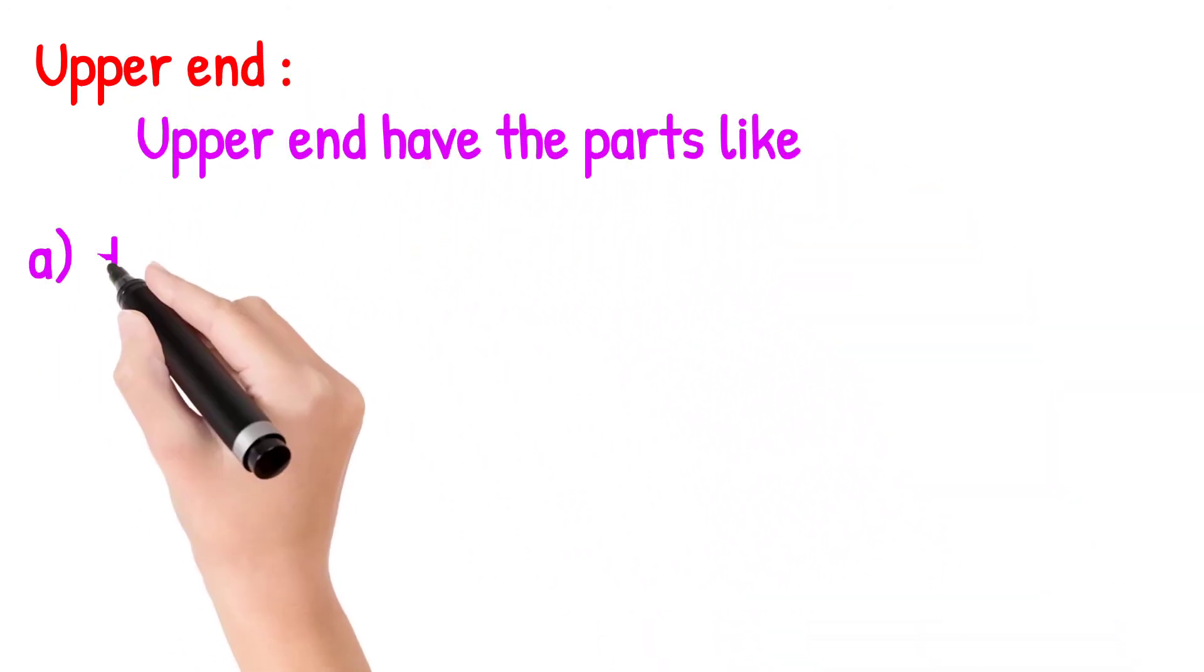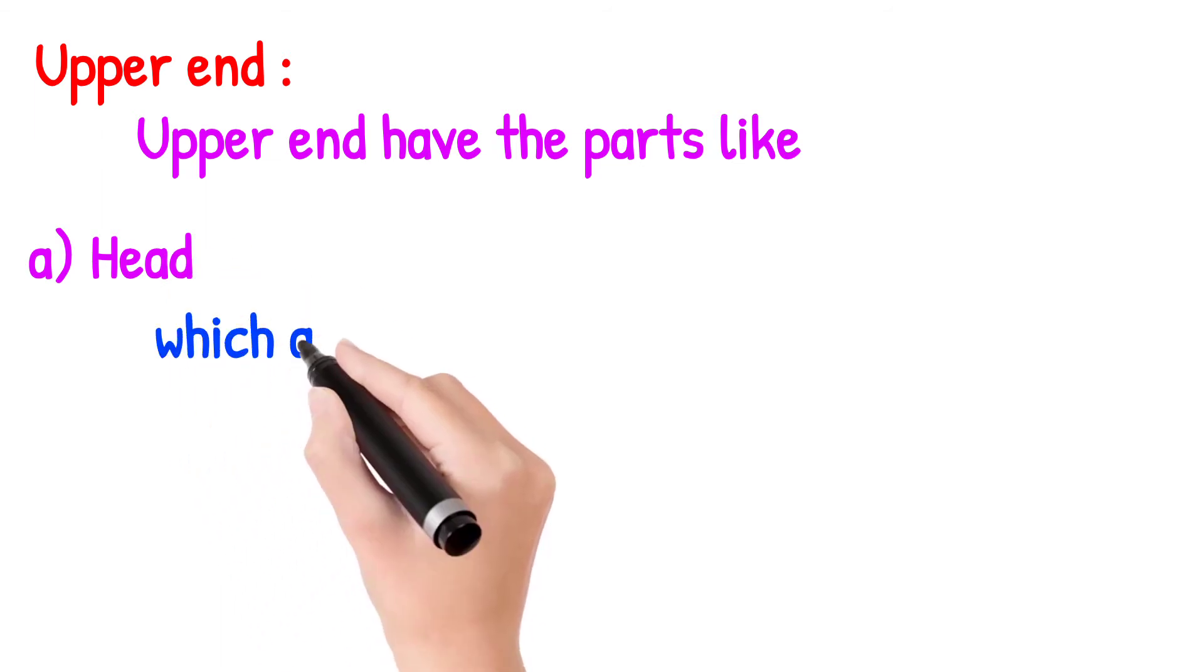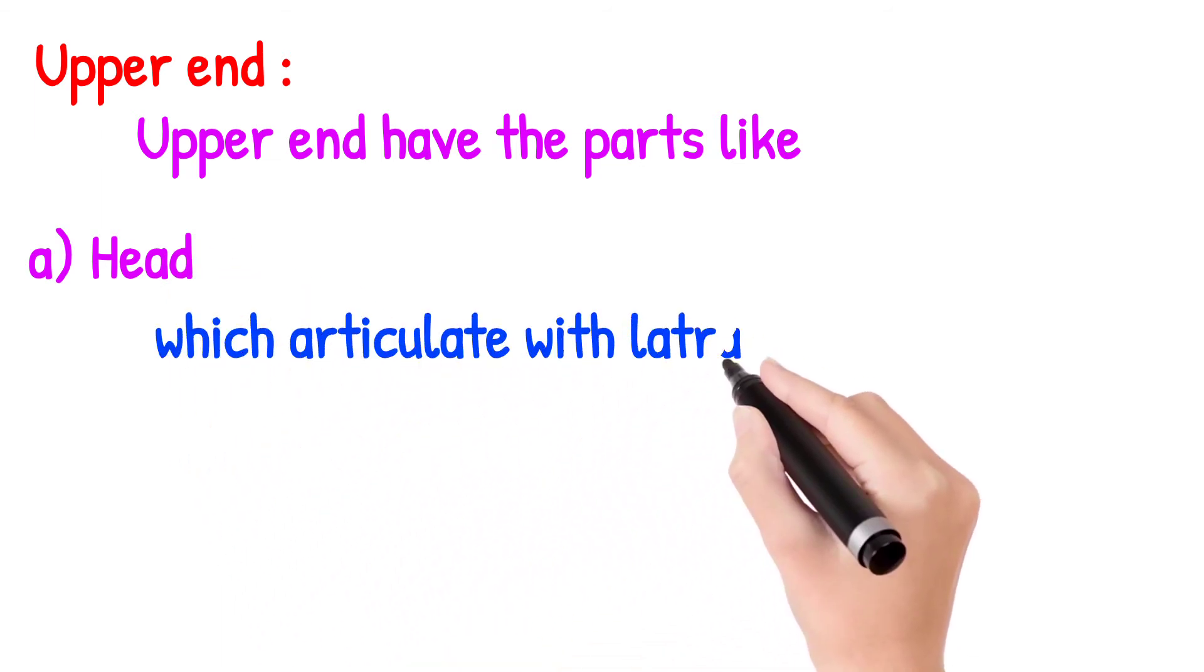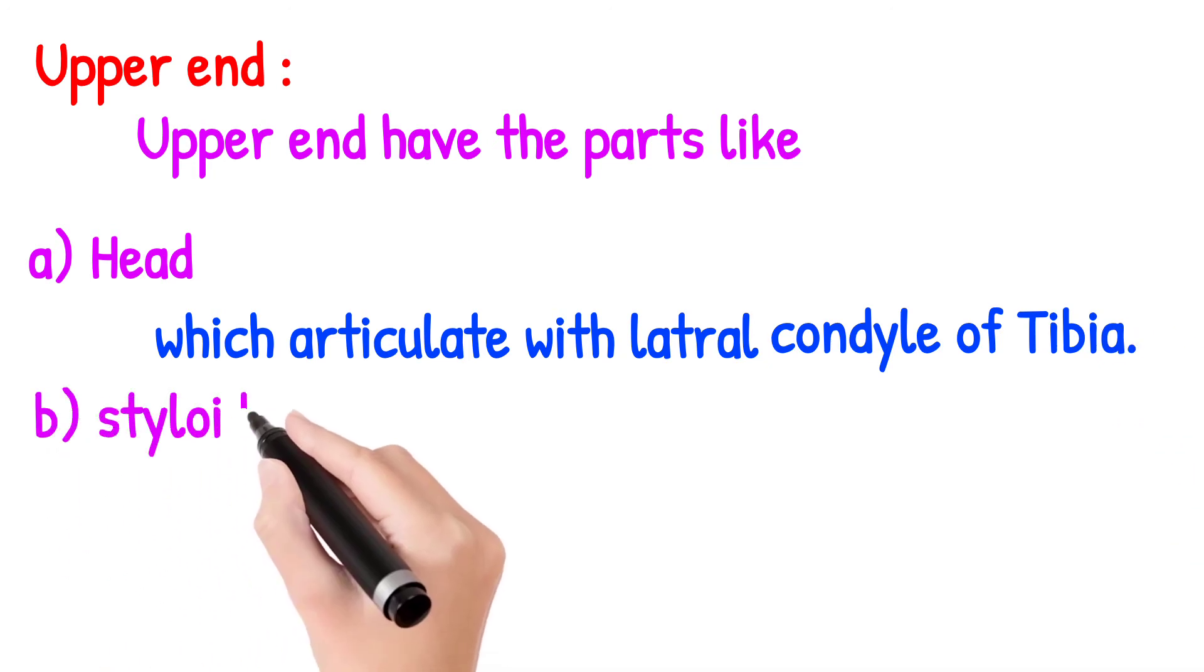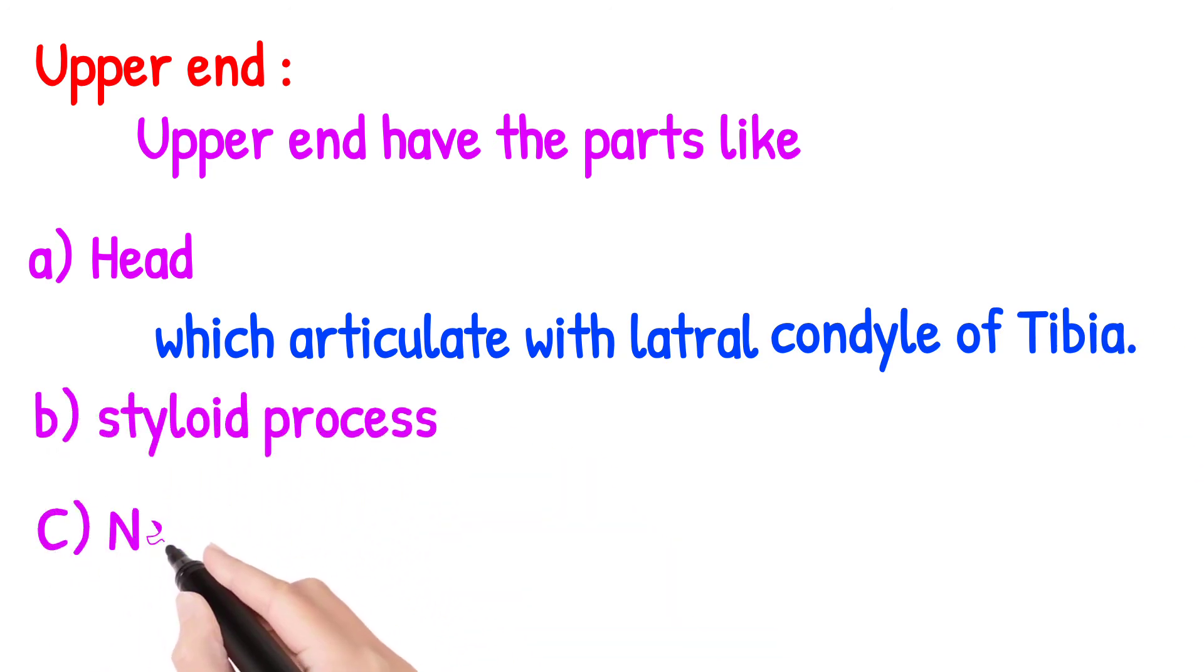The upper end has the following parts: the head, which articulates with the lateral condyle of tibia; the styloid process; and the neck.